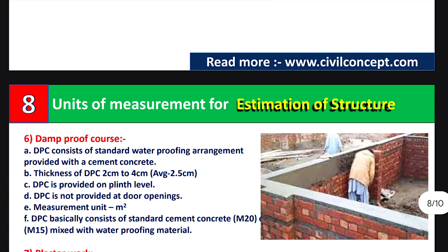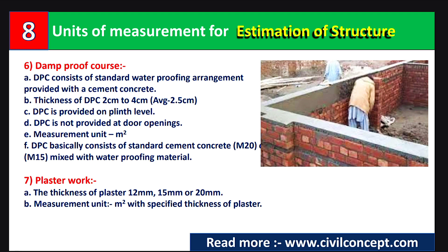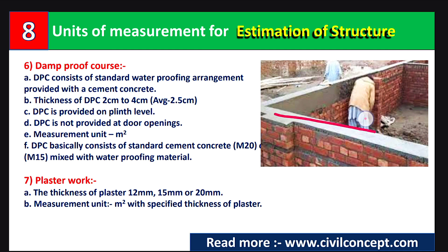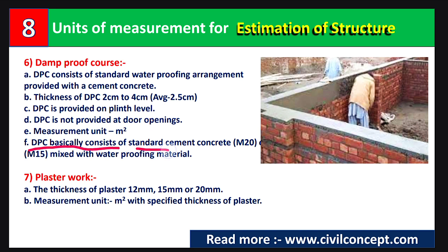The sixth topic is Damp Proof Course (DPC). DPC is provided to prevent seepage from the ground to the upper floor level. It consists of a standard waterproofing arrangement with cement and concrete. The thickness of DPC ranges from 2 cm to 4 cm, with an average of 2.5 cm. DPC is provided at plinth level and is not provided at door openings. The unit of measurement is square meters.